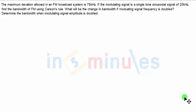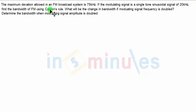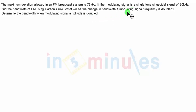The question goes something like this: the maximum deviation allowed in an FM broadcast system is 75 kilohertz. If the modulating signal is a single tone sinusoidal signal of 20 kilohertz, find the bandwidth of FM using Carson's rule. What will be the change in bandwidth if the modulating signal frequency is doubled? Determine the bandwidth when modulating signal amplitude is doubled.